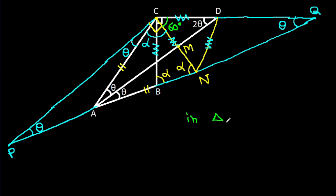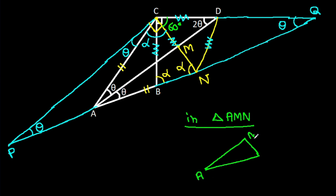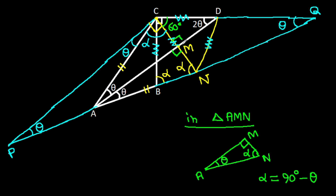Considering angle AMN: this angle is theta and this angle is alpha, and alpha is 90 degrees minus theta. So this angle will be theta plus (90 degrees minus theta), which equals 90 degrees. This angle is 90 degrees. That means this angle will also be 90 degrees.